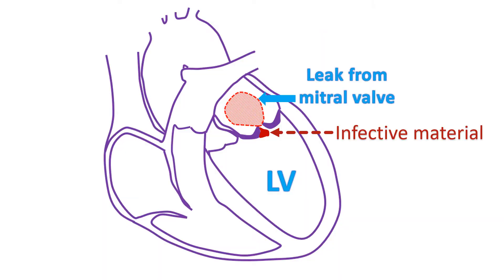Endocarditis can also occur due to non-infectious causes like certain disorders of the immune system and cancer. Infective endocarditis usually affects walls already damaged by some other disease like rheumatic heart disease. A normal wall can be affected if the immune system is weak or if the person is having injectable drug abuse. In that case, it is usually the right-sided heart walls which are affected first. Otherwise, infective endocarditis is more common in left-sided heart walls. The right-sided heart walls are the tricuspid valve and pulmonary valve; left-sided heart walls are the mitral valve and aortic valve.